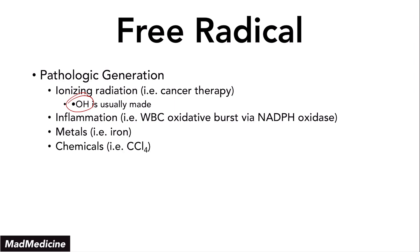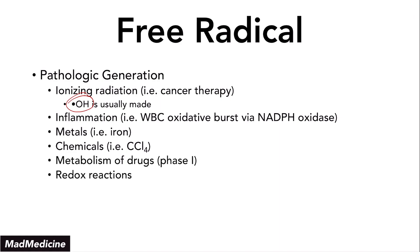Chemicals like carbon tetrachloride — a very high-yield topic — can also lead to free radical formation. Metabolism of drugs, especially in phase one, as well as redox reactions can also cause free radical formation. When it comes to free radicals, we talked about three types: we have the superoxide, we have hydrogen peroxide, and then we have the hydroxyl free radical.